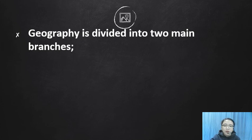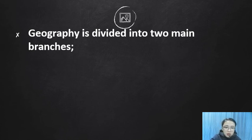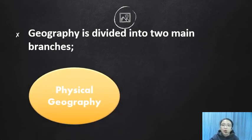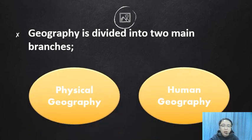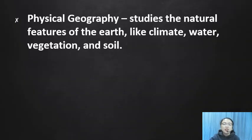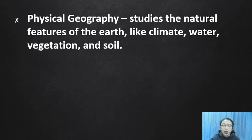Geography is divided into two main branches: physical geography and human geography. Physical geography studies the natural features of the Earth, like climate, water, vegetation, and soil.